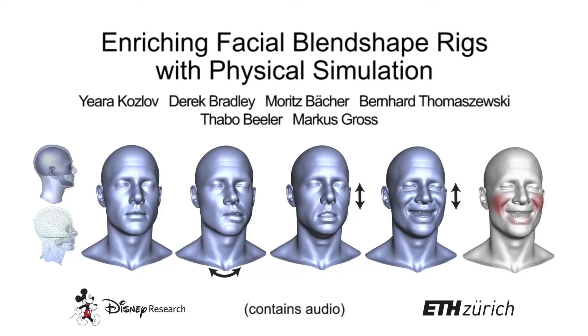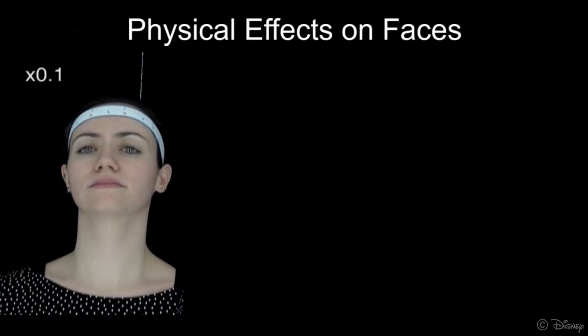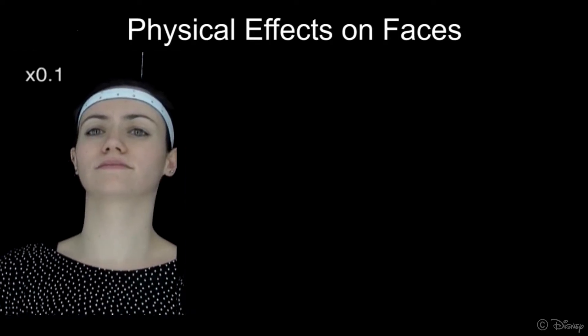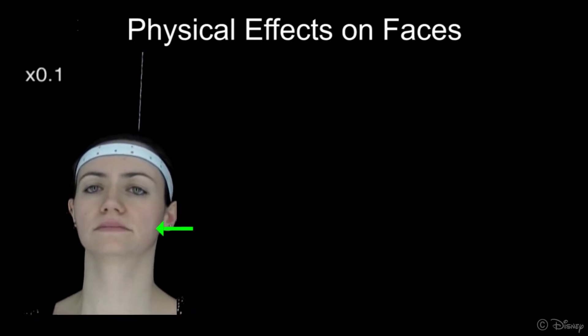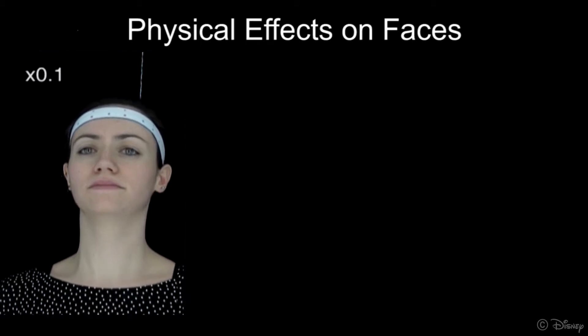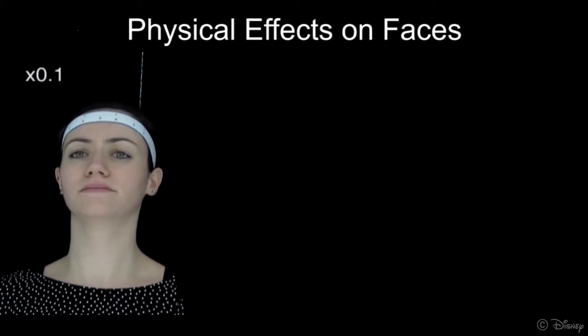We propose a method to enhance traditional blend shape animation with physical effects, such as secondary motion. In facial animation, subtle dynamics can add greatly to the realism of an animation, in particular for performance involving rapid motion like running.